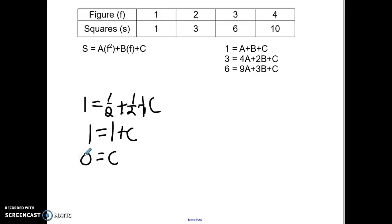What that tells me is that the equation I'm looking at is that the squares equals 1 half f squared plus 1 half f, and c is 0 so I don't need it. Now if I want to find any figure, I can plug in my figure number and that will tell me how many squares I have.